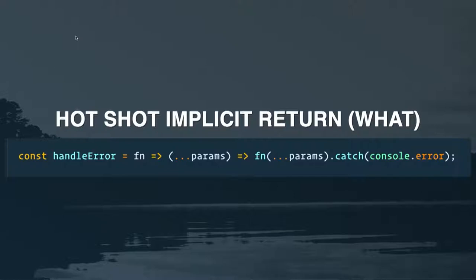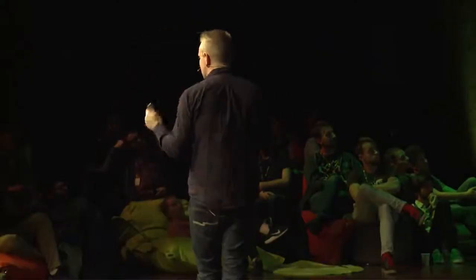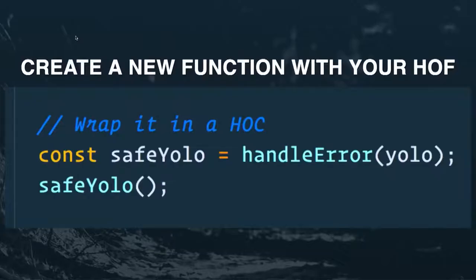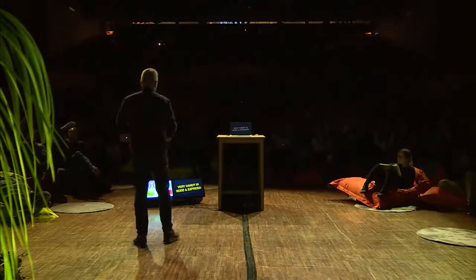If you're using ES6 for absolutely everything you can do it in one line and tweet about how cool you are. The way it actually works: we created our one function with no error handling, then we created this higher-order function that takes in a function and returns a new one. Then you just pass your unsafe function to handleError and that creates the new function that still does the same thing but is now able to handle any errors. I find this extremely handy in Node and Express.